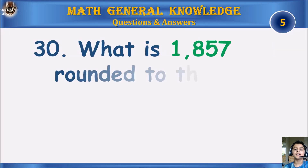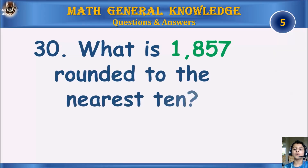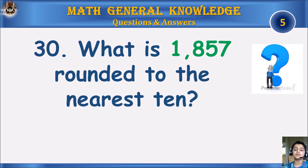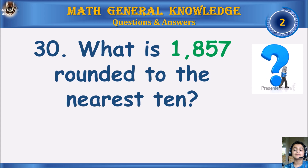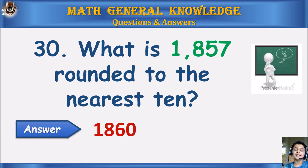What is 1857 rounded to the nearest 10? Your time starts. The answer is 1860.